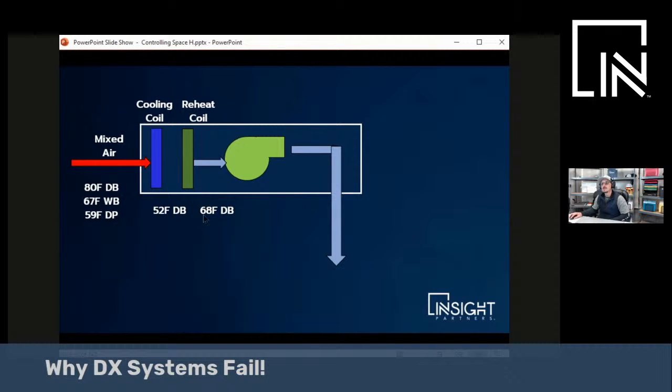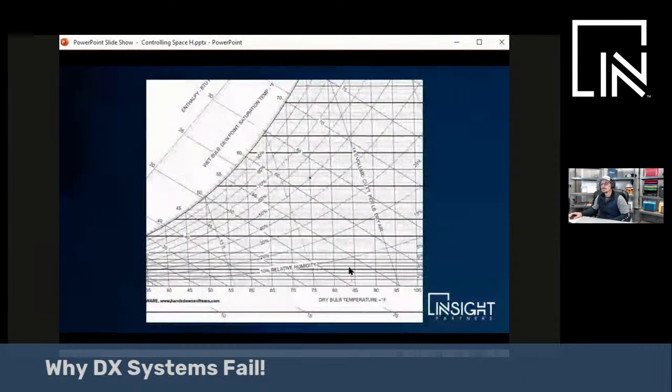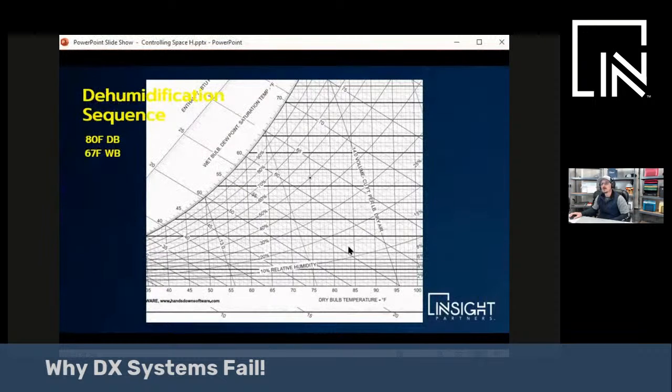We reheat it with the heating coil, let's say to 68. These are arbitrary example numbers. You pick up a few degrees with the fan. You blow this 70 degree air into the space, which is relatively warm, and everybody's good to go. Now you're dehumidifying the air and not freezing everybody out.